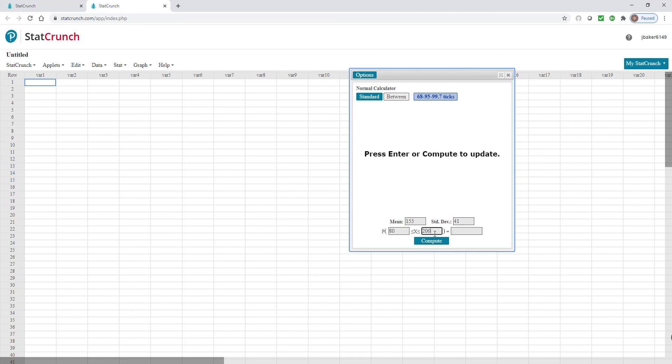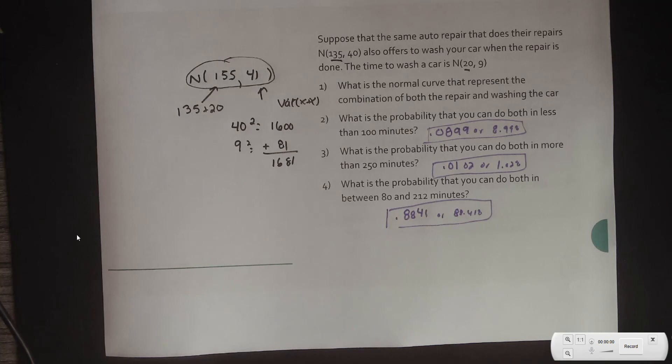What's the probability that you can do it between 80 and 210? So, 80, or sorry, 212, rather. So, I do 212 and compute. And that gives me 0.8841 or 88.41%. Okay, again, I'll flip back real fast. And there is my percentages.